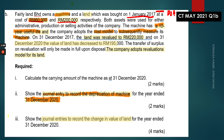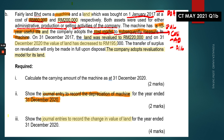The machine is highlighted in orange and the land in light yellow. Both assets were used for admin, production, or selling activities, confirming their nature as PPE. The machine has a 10-year useful life, and the company adopts the cost model to subsequently measure the machine — meaning carrying amount equals cost minus accumulated depreciation minus accumulated impairment loss. There is no need to incorporate changes in fair value for the machine.